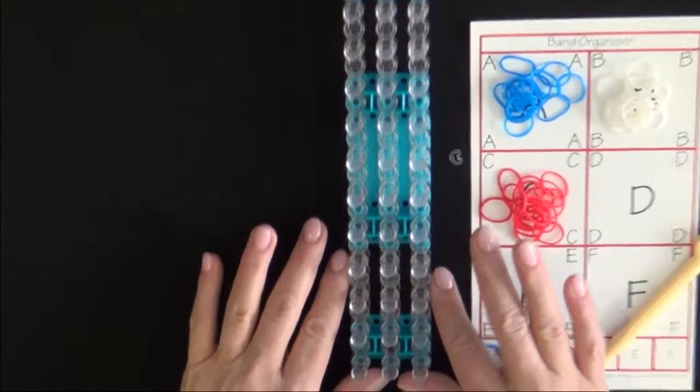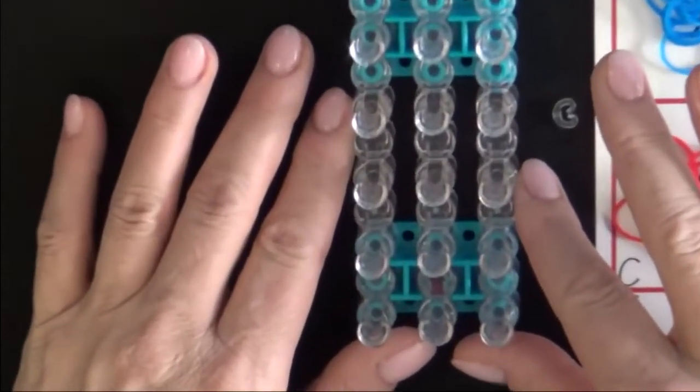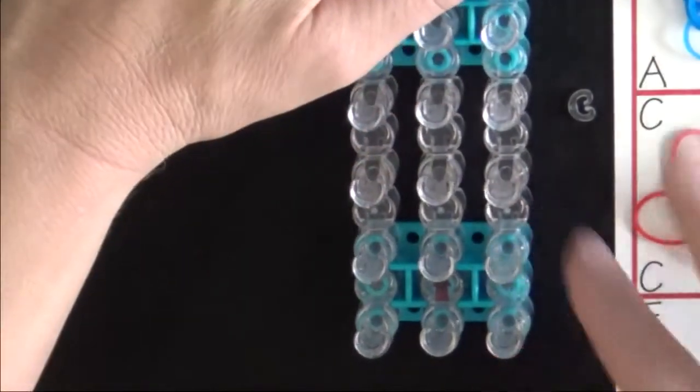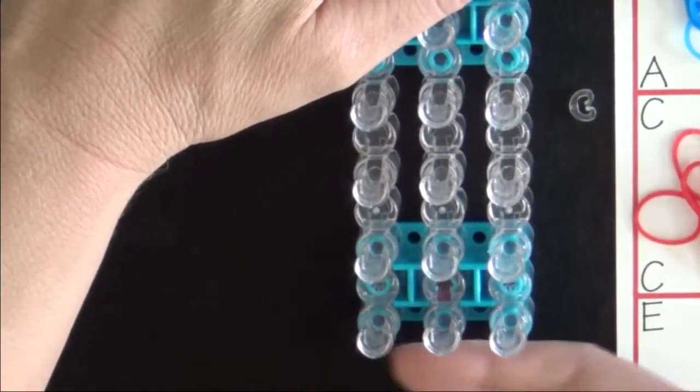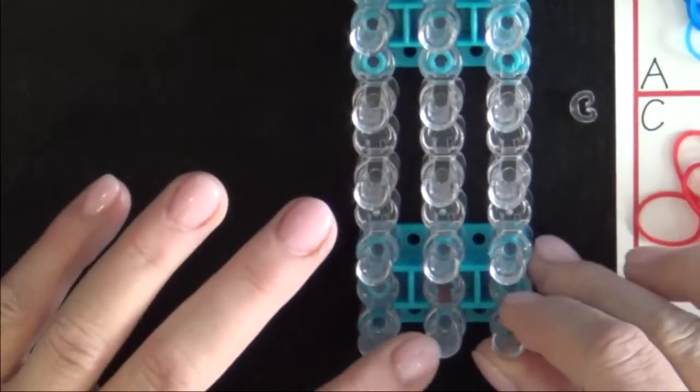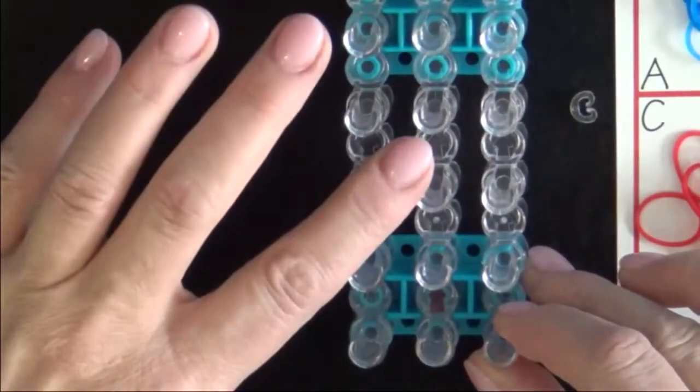Now, let's get started. Convert your loom to the rectangle configuration. All of the pins should be in a straight row. Place your loom so that the red arrow is pointing away from you.